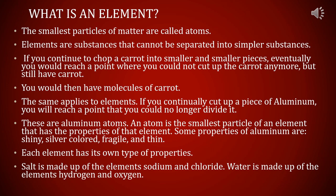Elements are already in their simplest form. For example, if you continue to chop a carrot into smaller and smaller pieces, eventually you reach a point where you cannot cut it anymore but still have carrot. The same applies to elements — if you continually cut up a piece of aluminium, you reach a point where you can no longer divide it. These are aluminium atoms, and the atom is the smallest particle of an element that has the properties of that element — shiny, silver-colored, fragile, and thin.